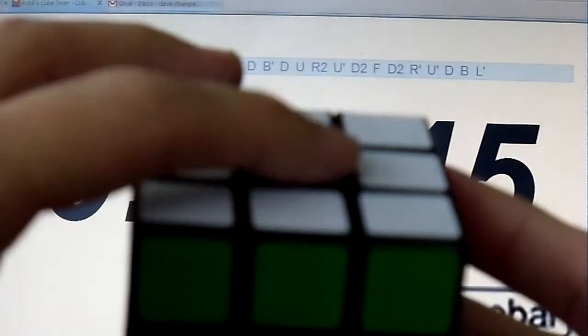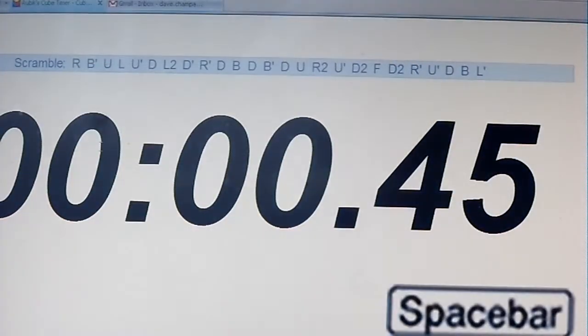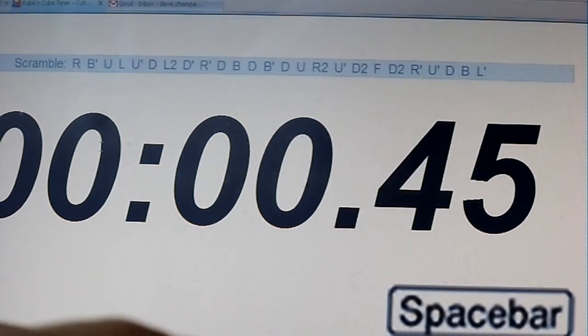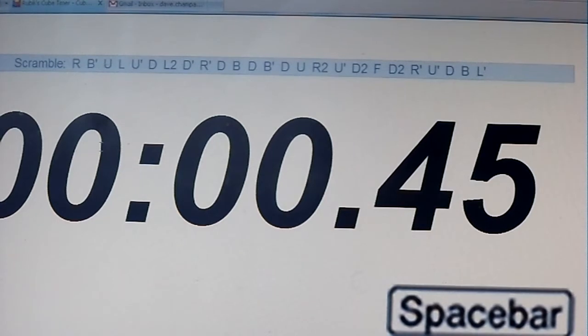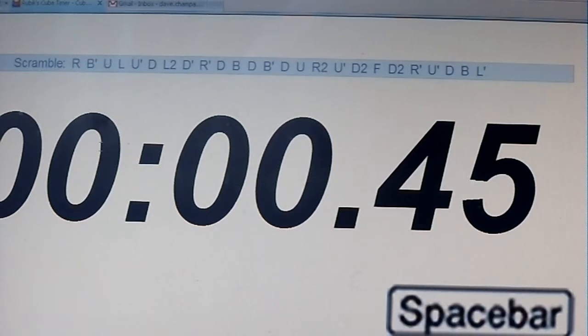As usual, white up. Green front. Right. Back prime. U. U prime. Down. Left two. Down prime. Right prime. Down. Down. Back prime. Down. U. Right. Two. U. Down. Back. L prime. And I have a feeling this is going to be a bad one.